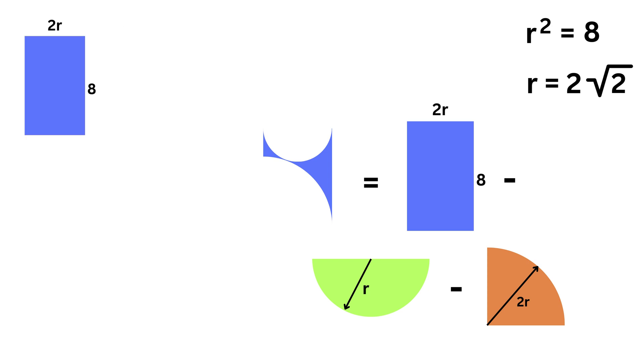Area of this rectangle equals length times width or 8 times 2r or 16r or 16 times 2 root 2 or 32 root 2.